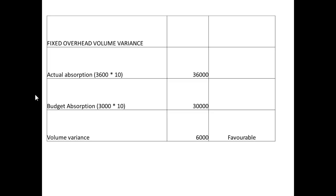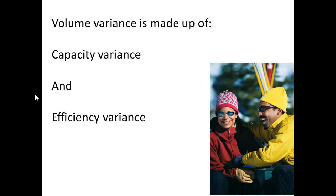Now let's look at the fixed overhead volume variance. The actual absorption — 3,600 multiplied by £10 — would be £36,000. The budget absorption was £30,000, so the volume variance is £6,000. The budget is less than the actual, so we've absorbed more than expected, which means it's favourable.